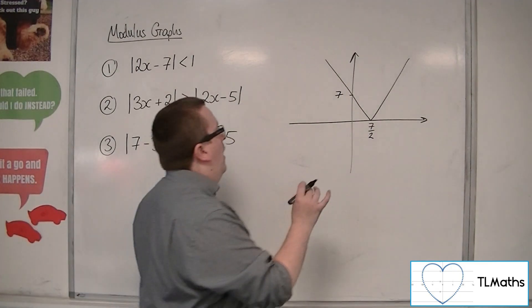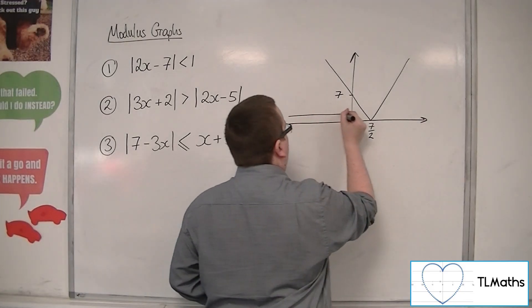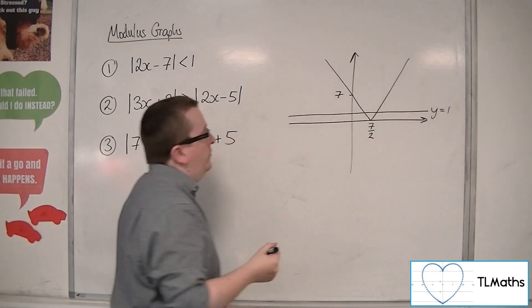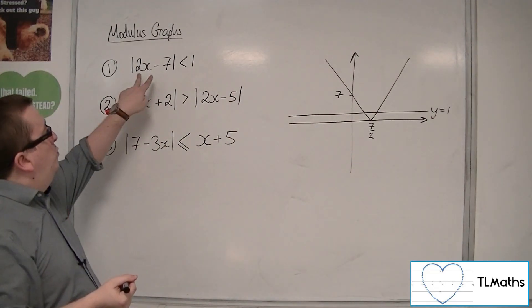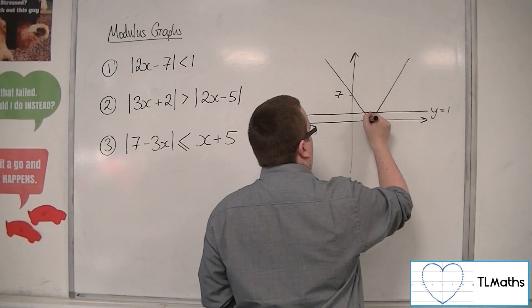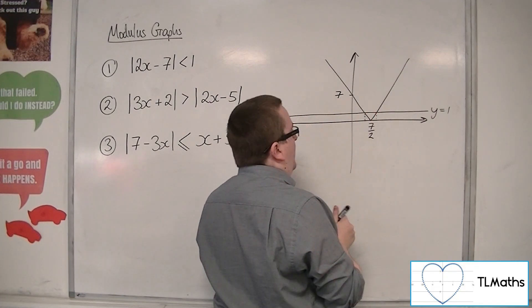Now, the line y equals 1 is this line here. So, I'm being asked, where is the modulus graph below y equals 1? Well, it's below it between those two values.